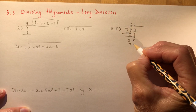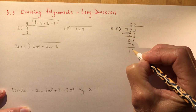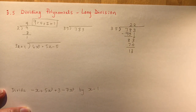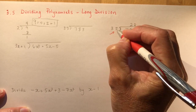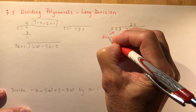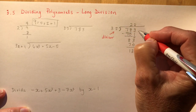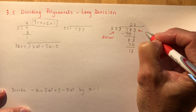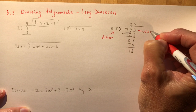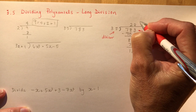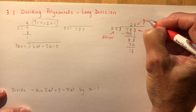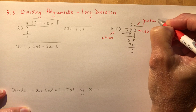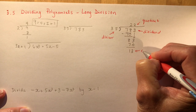Two times 35 is 70 and I have 13 as a remainder. There's terminology for these parts: the number out front is called the divisor, the number underneath is called the dividend, the number on top is the quotient, and this number here is your remainder.